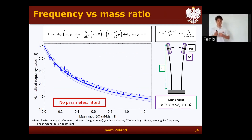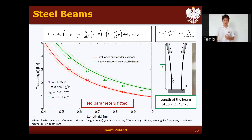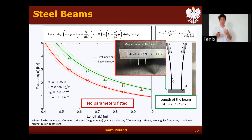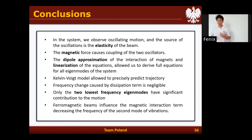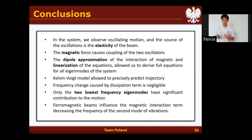We also checked how these frequencies depend on the mass ratio, and once again found very good correspondence — our master curve predicts all these frequencies very well. We don't see good correspondence for the steel beams, which is due to the fact that the beam magnetizes, causing the second mode to not work for a large length of beam. In conclusion, we created a theoretical model describing the frequencies of oscillation using Euler-Bernoulli theory, used a deformation model to find the dissipation constant, and were able to predict both the frequencies and the amplitudes over time for every possible scenario. Our experiments confirm that our theory predicts the results very accurately. Thank you.